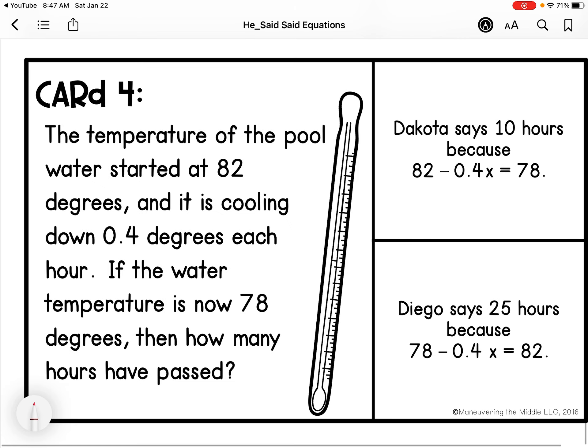The temperature of a pool started at 82 degrees. So I'm at 82. Then it's cooling down 0.4 degrees each hour. So minus 0.4 H. If the temperature is now 78, then how many hours have passed?